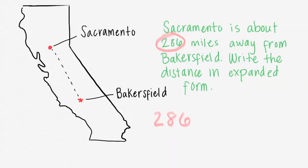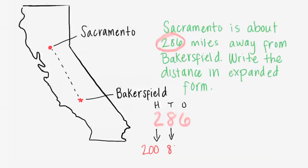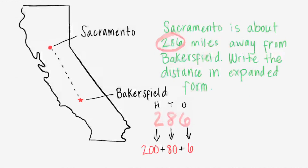Now remembering place value, the two is in the hundreds place, the eight is in the tens, and the six in the ones. This means the two is actually worth two hundreds, which makes 200. The eight is worth eight tens, which is 80, and the six is simply six ones. We simply put plus signs in between them because 200 plus 80 plus 6 equals 286.